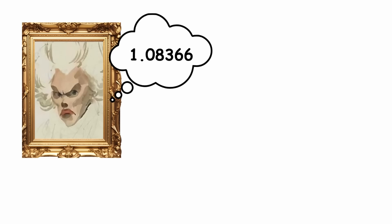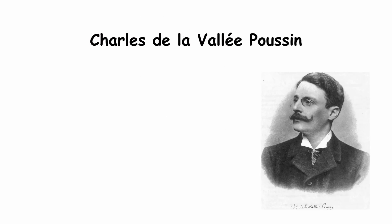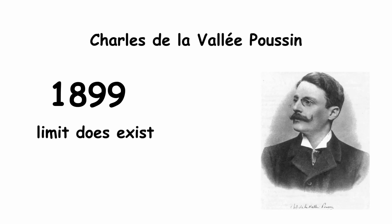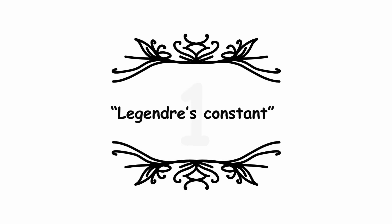So while Legendre seemed to think that b was some number other than 1, this proof already showed that to be false. Either it is 1, or it just doesn't exist at all. Due to a later proof by Belgian mathematician Charles de la Vallée Poussin in 1899, we now know that the limit does exist, so b is indeed equal to 1. It only took nearly a century for this proof to appear. Due to this result, the term 'Legendre's constant' can be used nowadays as an overly fancy way of saying the number 1, though doing this is not recommended.